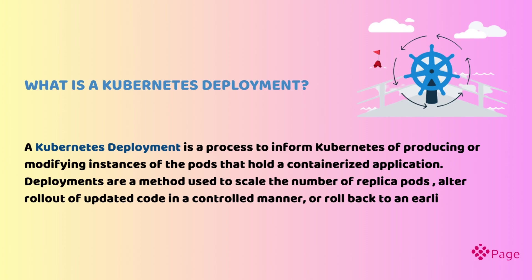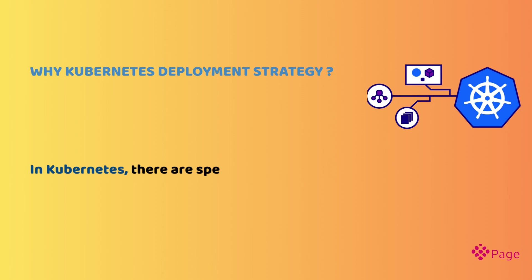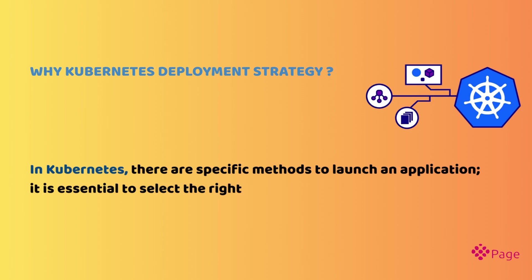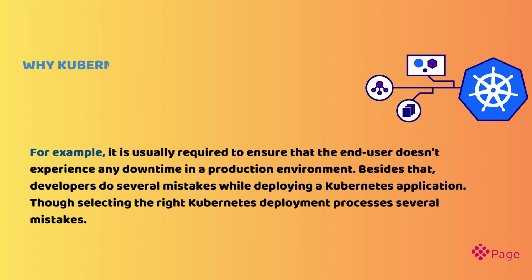Deployments are a method used to scale the number of replica pods, alter rollout of updated code in a controlled manner, or roll back to an earlier deployment version if necessary. Why Kubernetes deployment strategy? In Kubernetes there are specific methods to launch an application. It is essential to select the right approach to make your infrastructure reliable during an application deployment or update. For example, it is usually required to ensure that the end user doesn't experience any downtime in a production environment.